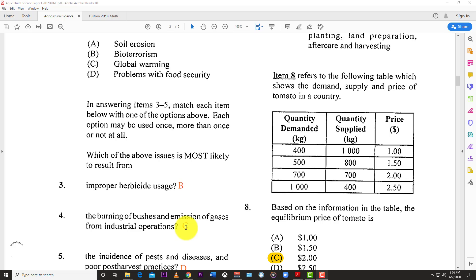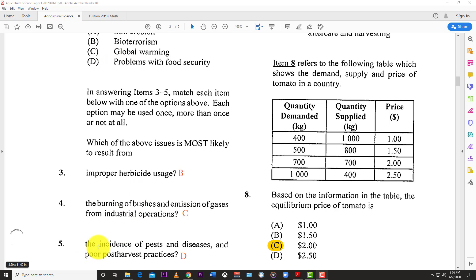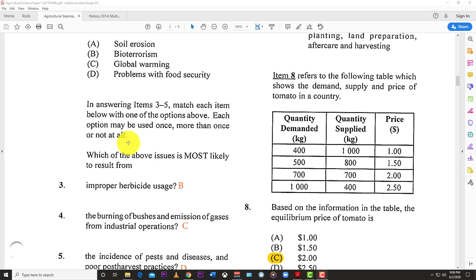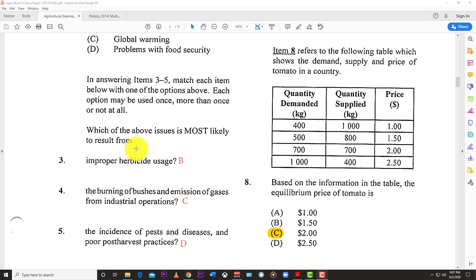Number four: The burning of bushes and emissions of gases from industrial operations, that's C, global warming. Number five: The incidence of pests and diseases and poor harvest practices can cause problems with food security.